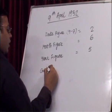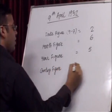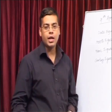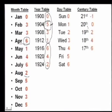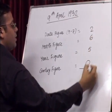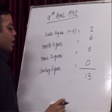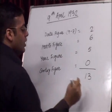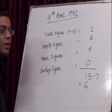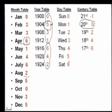Now comes the century figure. 1932 is in the 20th century, and from the century table the 20th century gives 0. So we add up: 2 plus 6 is 8, plus 5 is 13, plus 0 is 13. Whenever we get a figure, we reduce it by the nearest multiple of 7 less than the number — 13 minus 7 leaves 6. Looking back at the day table, 6 is Saturday. So 9th April 1932 was a Saturday.